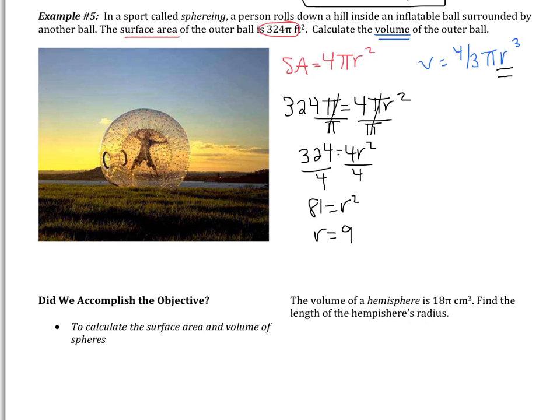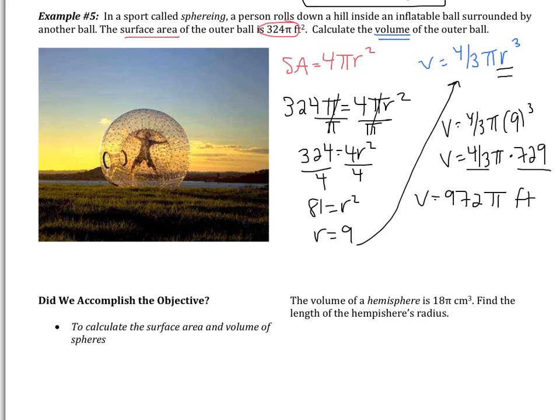Now, the question asks us for the volume of the outer ball. So now I'm going to have to substitute this into the volume formula. So volume is going to be 4 thirds pi times 9 cubed. So this ends up being 4 thirds pi. 9 cubed is 729. Next, I'm going to multiply the 4 thirds and the 729, and I get my volume to be 972 pi feet cubed.